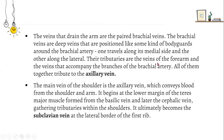The veins that drain the arm are the paired brachial veins. The brachial veins are deep veins positioned around the brachial artery, one traveling along its medial side and the other along the lateral. Their tributaries are the veins of the forearm and the veins that accompany the branches of the brachial artery, all of them together tributating to the axillary vein. The main vein of the shoulder is the axillary vein, which conveys blood from the shoulder and arm. It begins at the lower margin of the teres major muscle, formed from the basilic vein and later the cephalic vein, ultimately becoming the subclavian vein at the lateral border of the first rib.